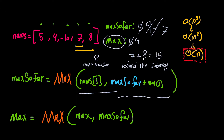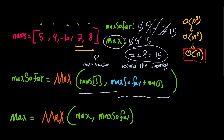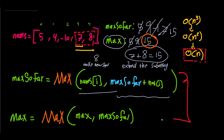We extend our subarray to include seven and eight, so max_so_far becomes 15. Since 15 is greater than nine, we update max to 15. That is our answer — 15 is the maximum sum from a contiguous subarray. We only moved through the array once, giving us O(n) time complexity. Remember these two equations and let's go to LeetCode.